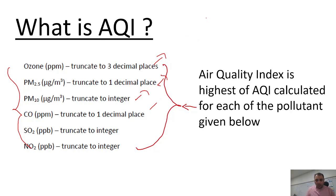Currently in North India a lot of crop burning is taking place, which is causing air pollution and the AQI values being reported. Now let us see what the components are for which AQI is calculated. Those are ozone, PM 2.5 — that is particulate matter of size up to 2.5 micron.